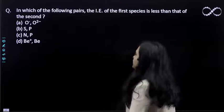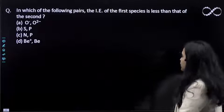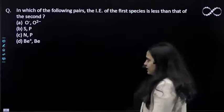Hello students, in this question you are asked in which of the following pairs the ionization energy of the first species is less than that of the second.